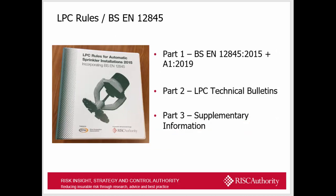Currently we have the LPC rules, which incorporates BSEM 12845 — the standard the sprinkler industry uses. Some sprinkler systems can be designed and installed to meet building control and Approved Document B, known as a life safety requirement. But the majority of sprinkler systems are installed for property protection purposes as required by insurers, and that's the LPC rules. Part 1 is BSEM 12845, a minimum standard used for Approved Document B.